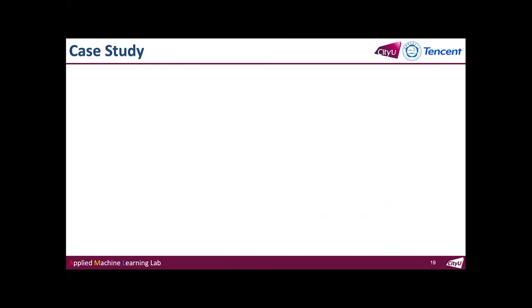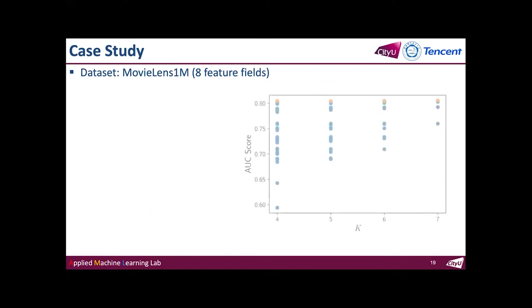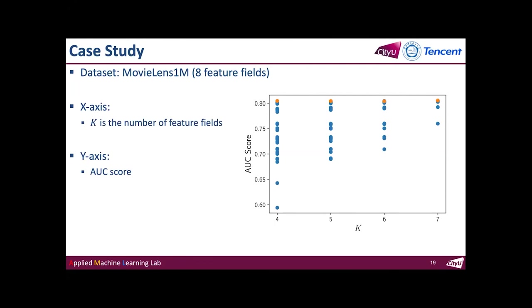Finally, I want to show our case study. We conducted this experiment on MovieLens 1 Million. There are eight feature fields in total. We enumerated all possible feature field subsets and tested the corresponding performance. The x-axis stands for the number of feature fields in the subset, k, ranging from 4 to 7, and the y-axis is the AUC score achieved. Blue points are enumerated subsets, and orange points are feature field subsets selected by AutoField. We find that for every k, AutoField achieves top performance, further proving its effectiveness.